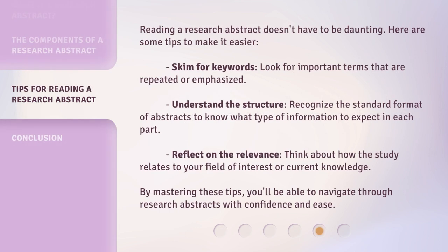Reading a research abstract doesn't have to be daunting. Here are some tips to make it easier. Skim for keywords: look for important terms that are repeated or emphasized. Understand the structure: recognize the standard format of abstracts to know what type of information to expect in each part. Reflect on the relevance: think about how the study relates to your field of interest or current knowledge. By mastering these tips, you'll be able to navigate through research abstracts with confidence and ease.